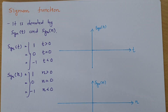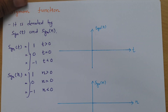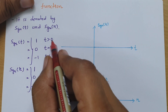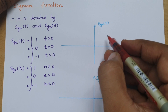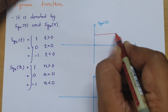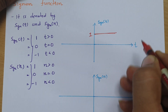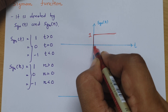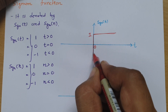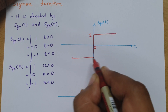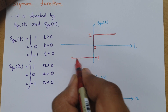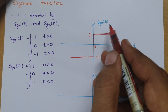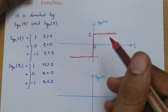Let us try to understand this in continuous time and discrete time with graphical understanding. For continuous time, its value will be 1 for t greater than 0, where t equal to 0 is the reference point. It will be 0 at t equal to 0, and it will be minus 1 for t less than 0. That is how the signum function appears in graphical representation for continuous time.